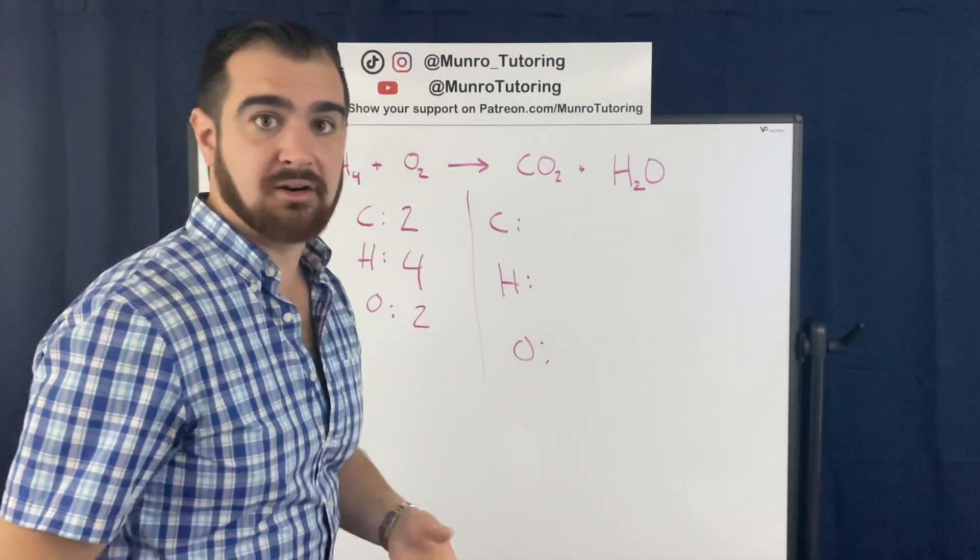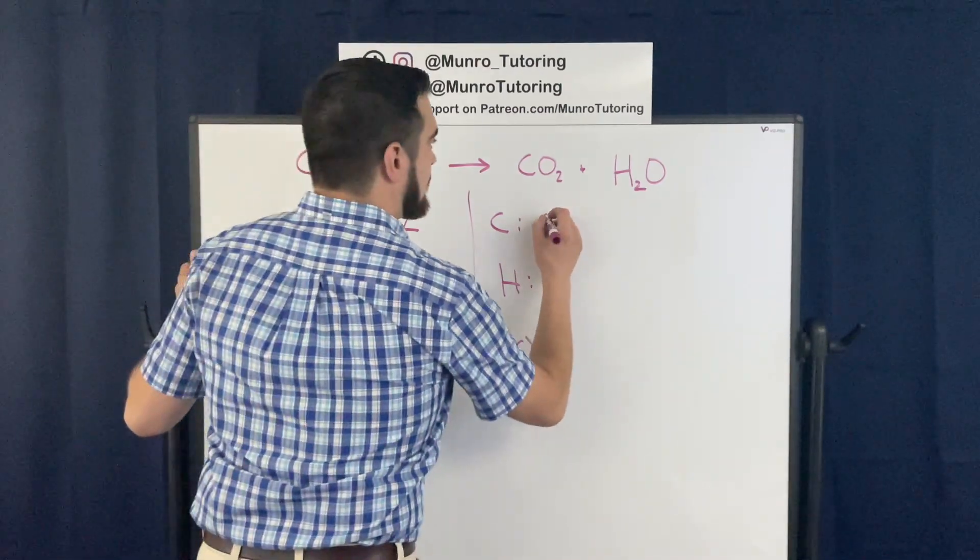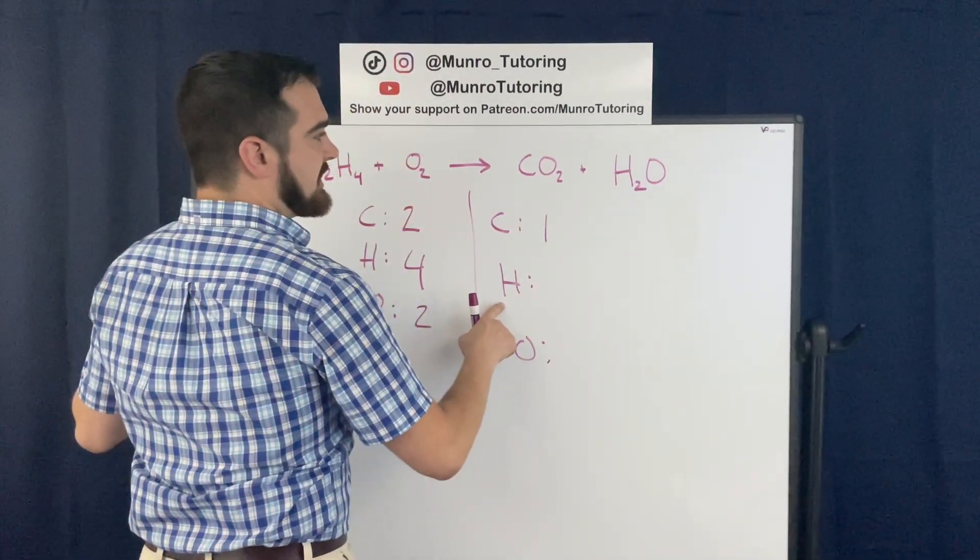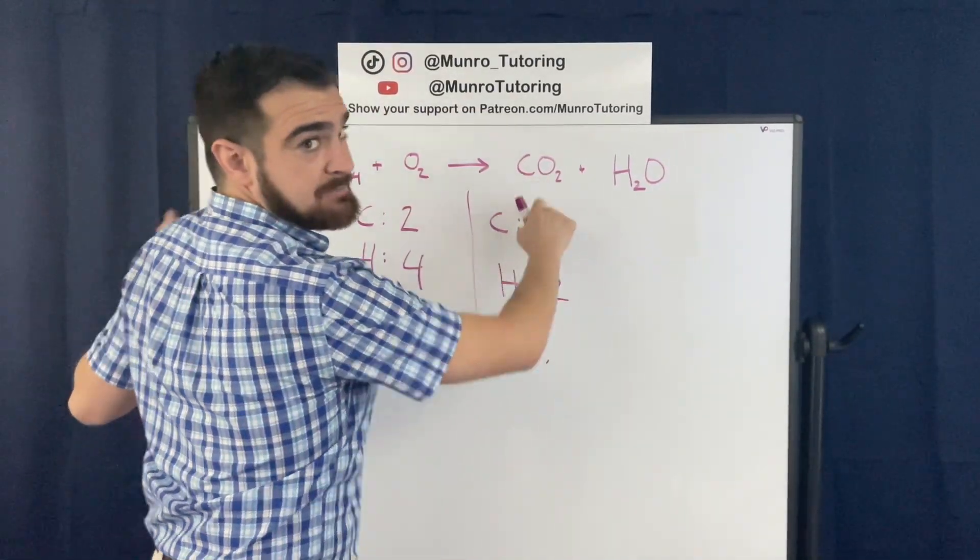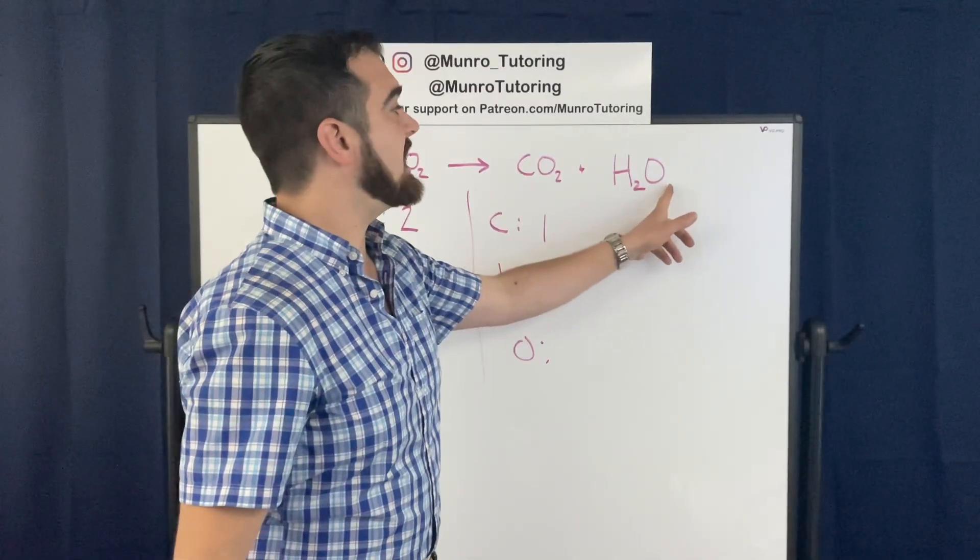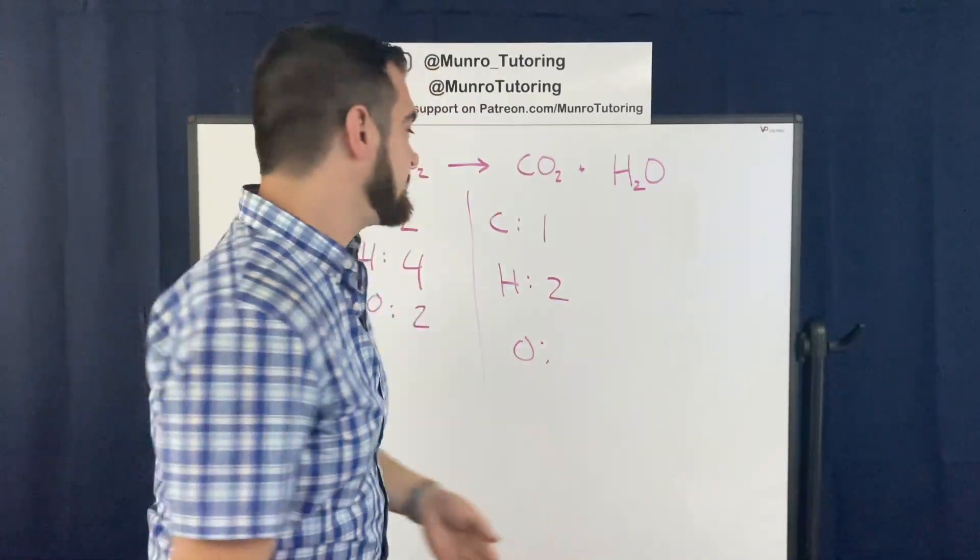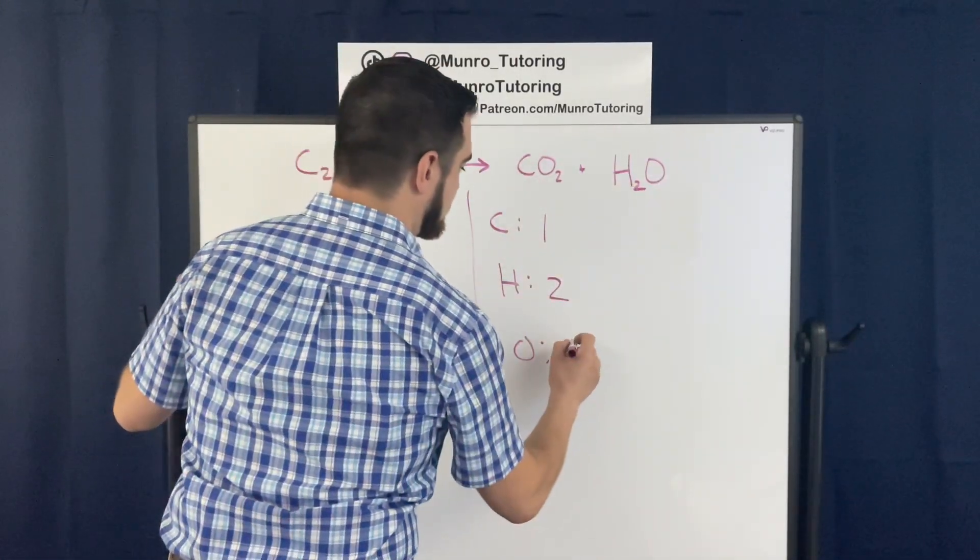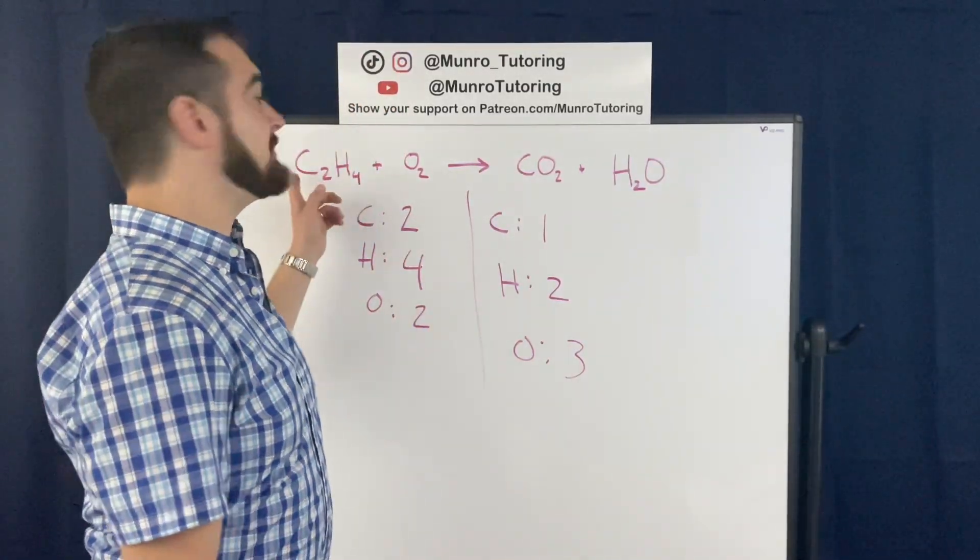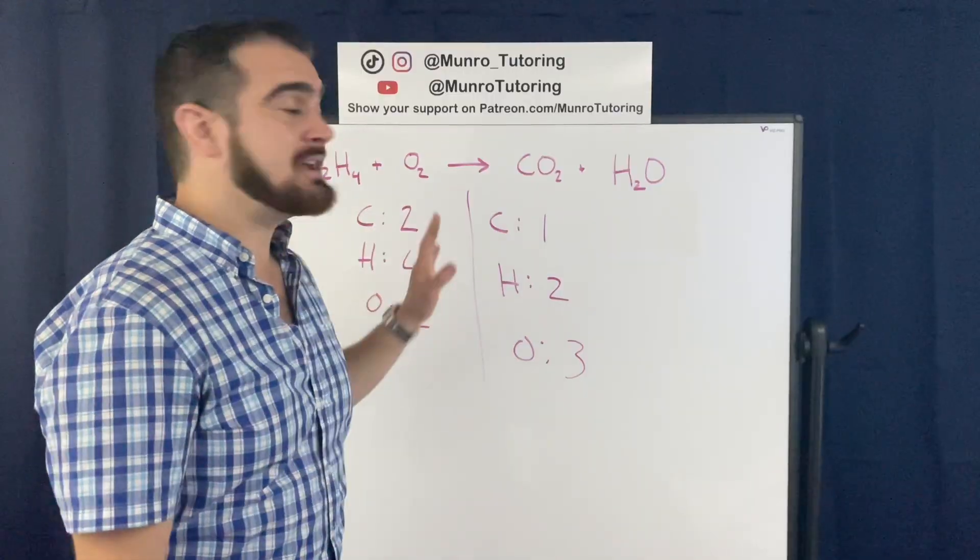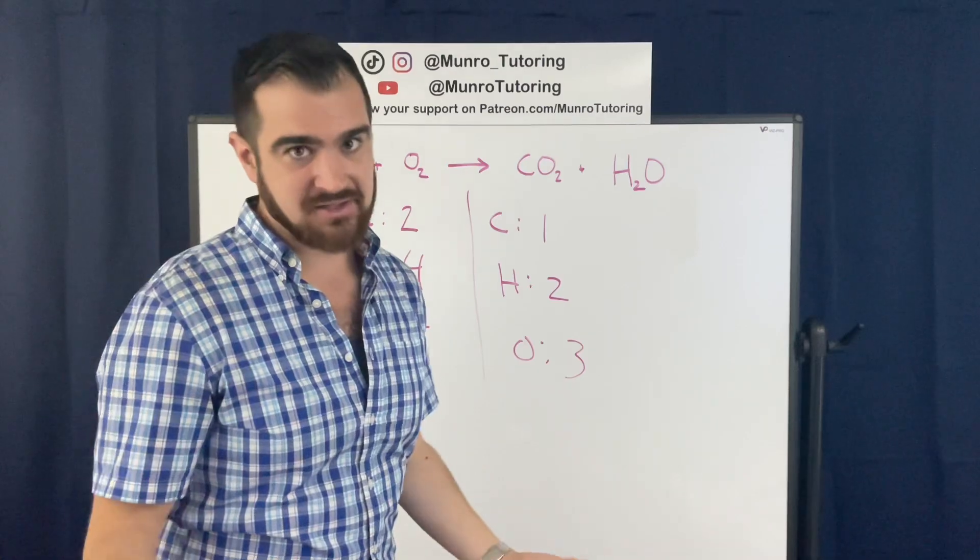And we're going to count how many there are of each on this side. So now on the product side, we have one carbon. We have, we're going to do hydrogen next. We have two hydrogens. And then in this molecule, we have two oxygens. But then over here in the water, we have another oxygen, right? When there's no subscript written, it's an implied one. So we have two, three oxygens on this side. And when doing a reaction like this, I always suggest to balance the carbon first, then the hydrogen, and then the oxygen. This is called a combustion reaction, and it basically always works out easier to do it in this order.